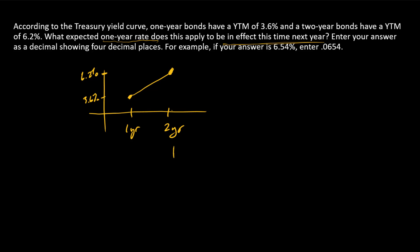How could someone invest for two years? One way is to simply buy a two-year bond, and we know that bond has a yield to maturity of 6.2%. An alternative way is to first buy a one-year bond, and then after that bond matures, roll the investment over to another one-year bond. What we see here on the yield curve is the yield to maturity on that first one-year bond, but we don't know what the yield is going to be on that future one-year bond.